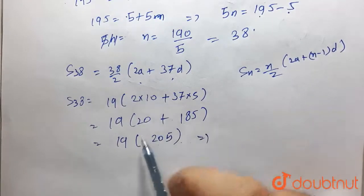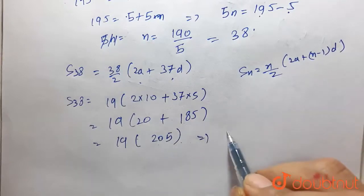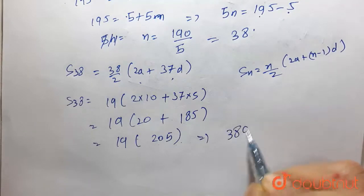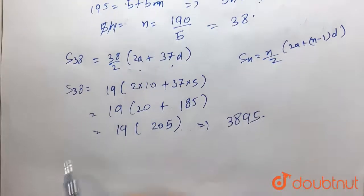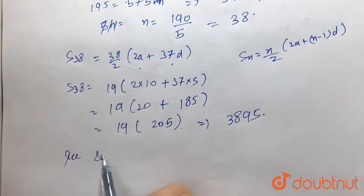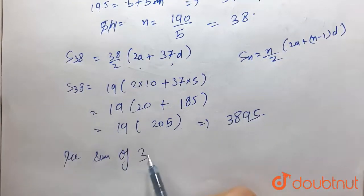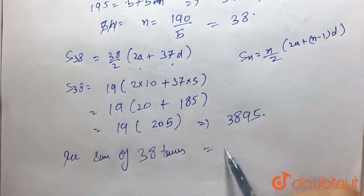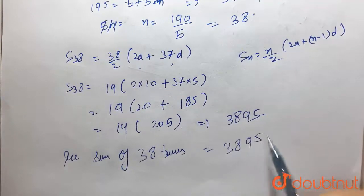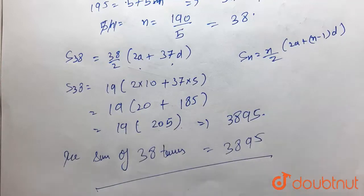From here, the product of these two becomes 3895. So the sum of 38 terms is equal to 3895, and this is our answer.